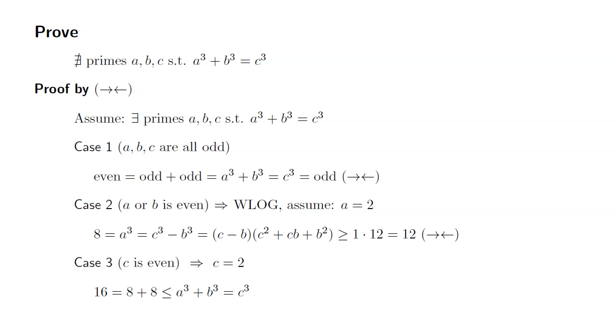But since c = 2, c³ = 8, which is a contradiction because now we're saying 16 ≤ 8.